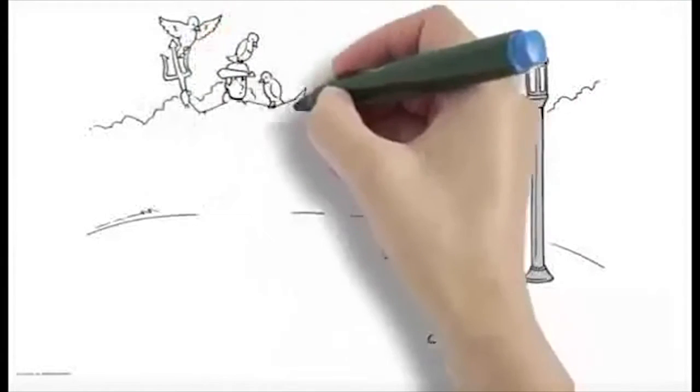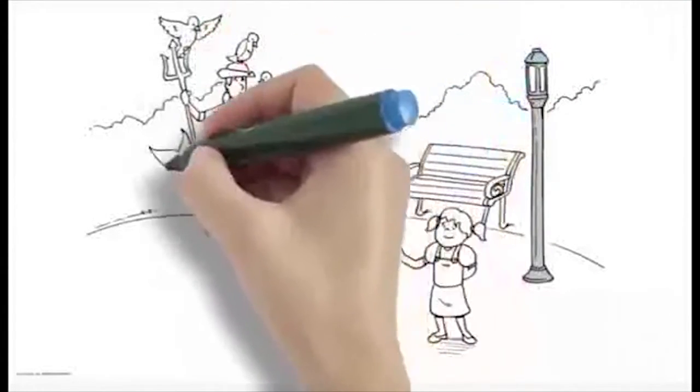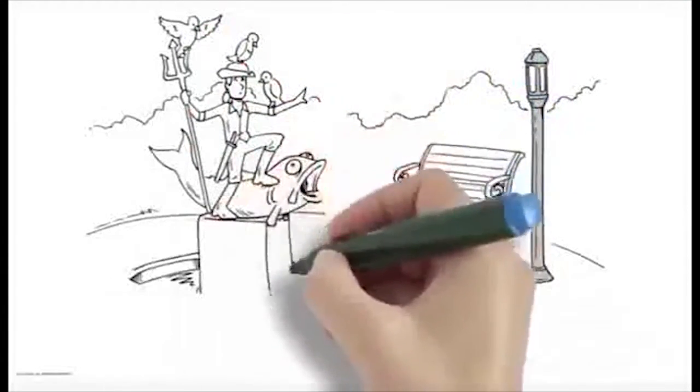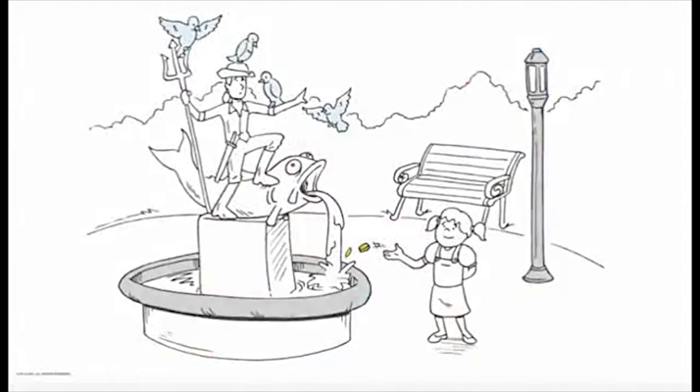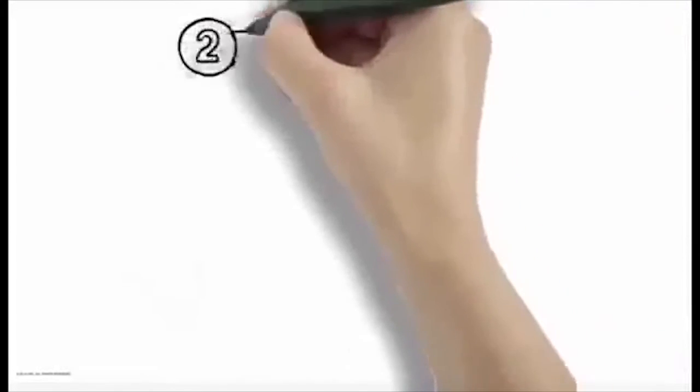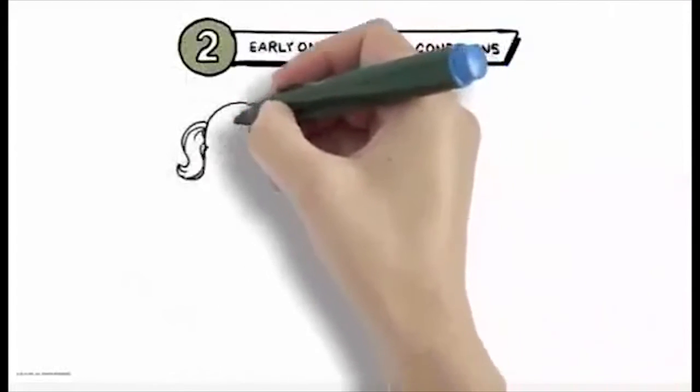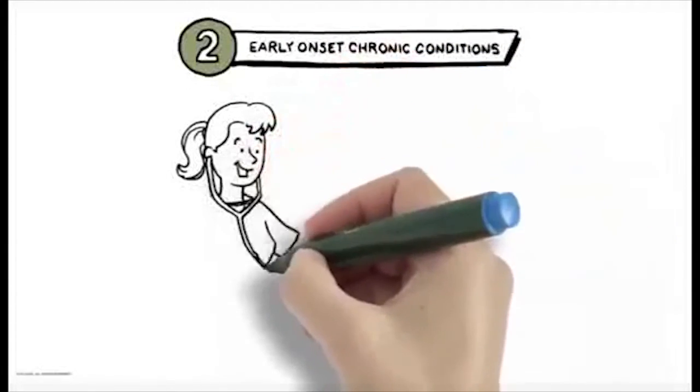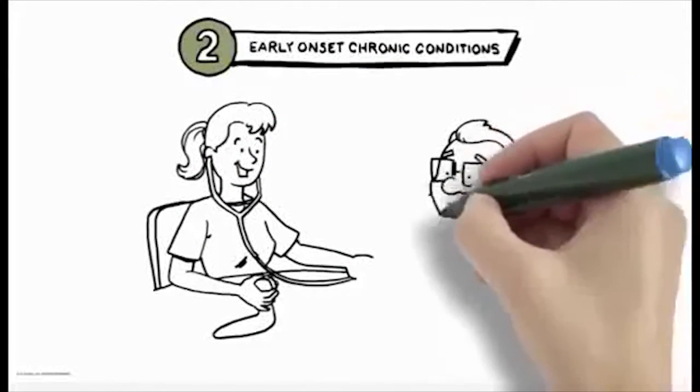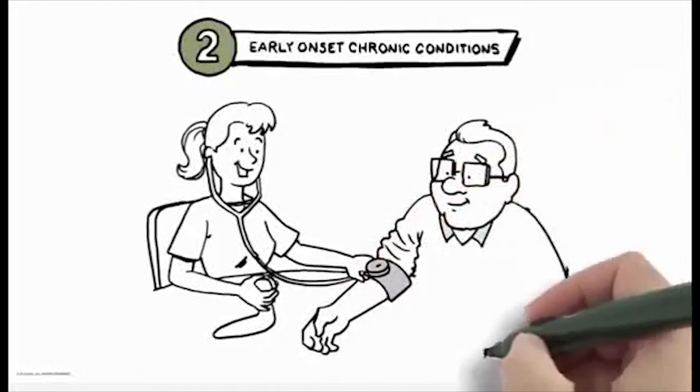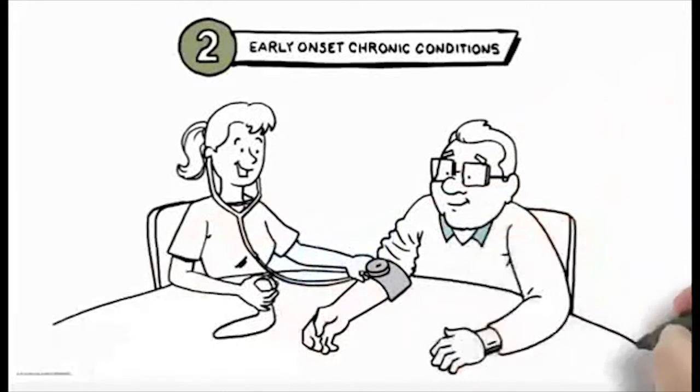Unpredictable, unavoidable single events just happen, and in most cases there is nothing that a primary care medical home can do to prevent them. The second biological cohort, accounting for about one-third of the pre-Medicare population and the poster child for managed care enthusiasts for 40 years, has early onset chronic conditions such as diabetes or hypertension.